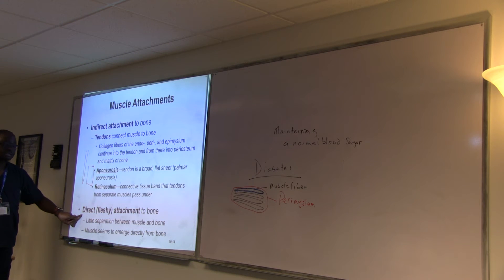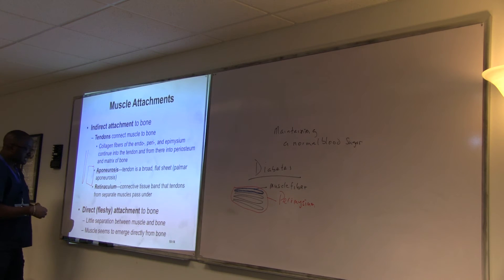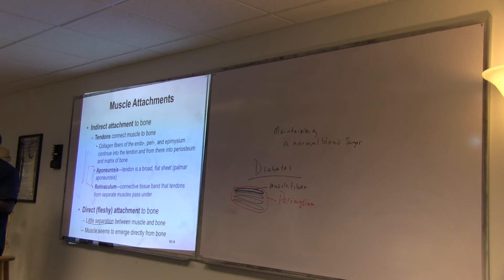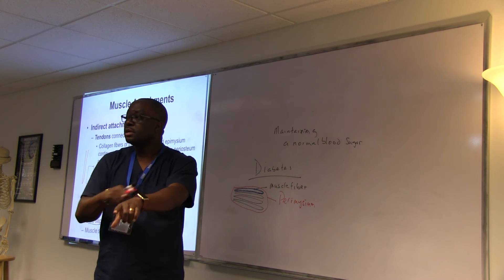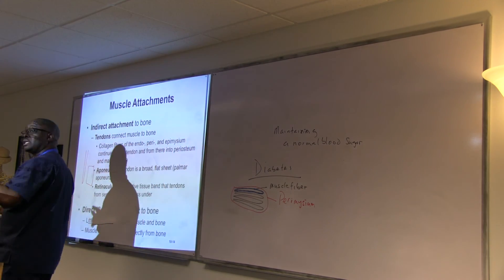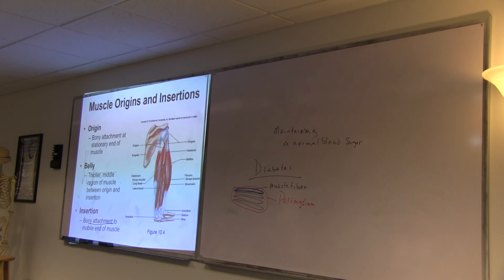The direct attachments means there is little separation between the muscle and the bone. So they come almost like they come directly from the bone. That's direct attachments. The main thing is there is little separation between the muscle and the bone. What helps? So that's the tendon that is going to the bone, it doesn't keep irritating the bone. The bursa keeps it free. So that it doesn't get irritated by sliding on the bone. So very important.